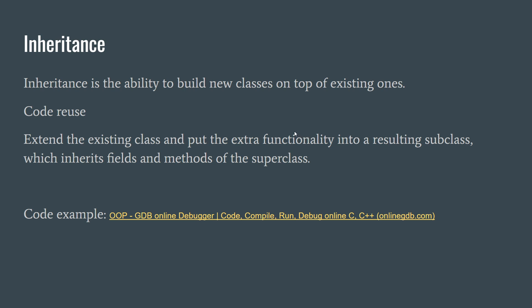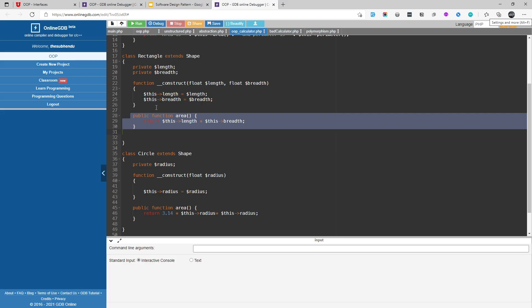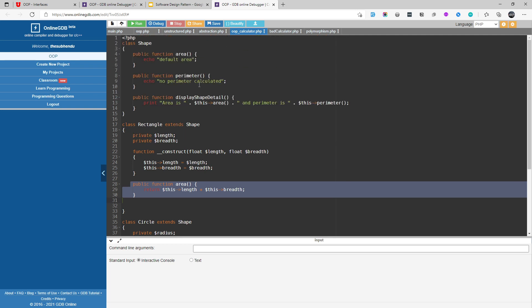First let's discuss inheritance. Inheritance is the ability to build new classes on top of existing ones. The basic use of this pillar is code reuse — it is the method of reusing our code. We extend the existing class and put the extra functionality into resulting subclasses, which inherit fields and methods of the superclass. We have one parent class and child classes, also known as subclasses and superclasses. Let's better understand this concept by a code example.